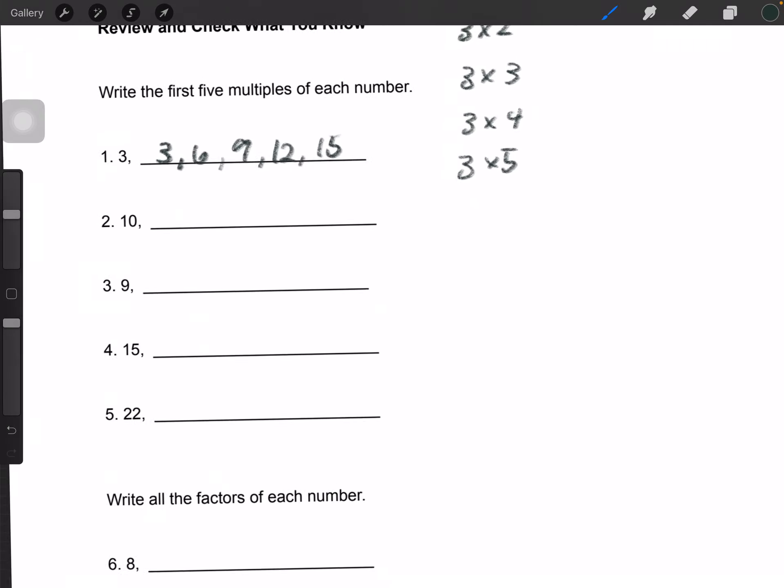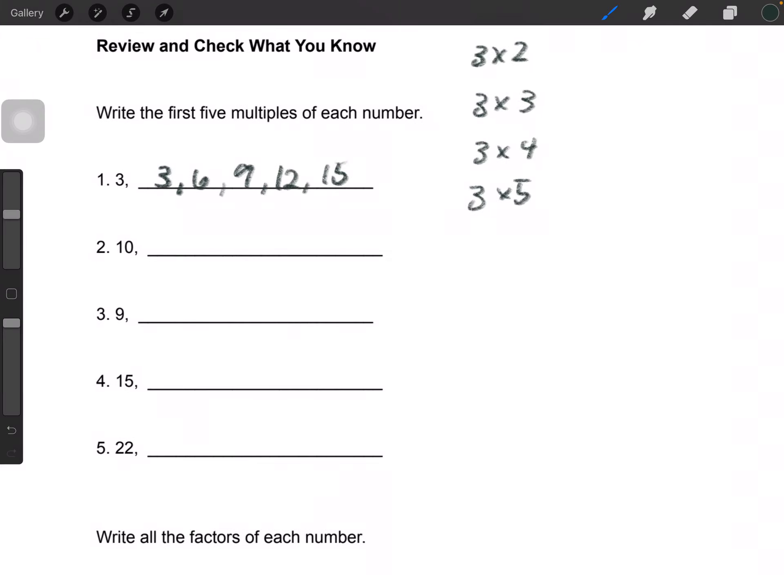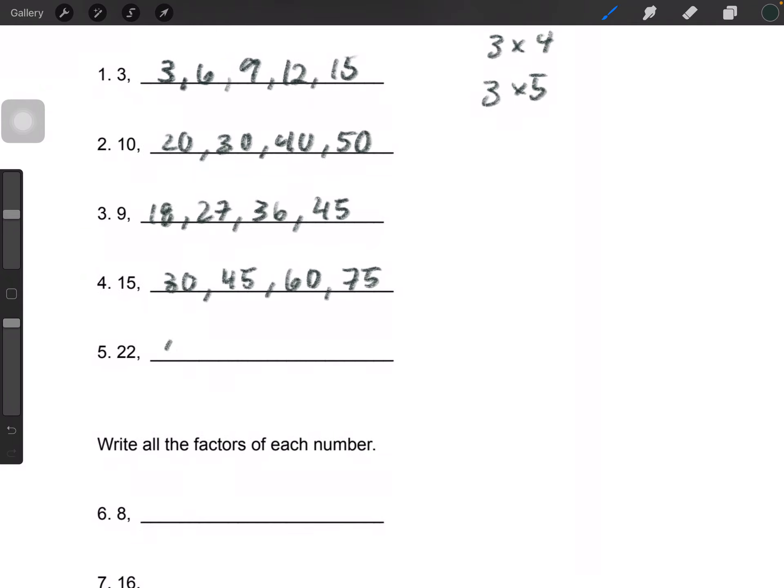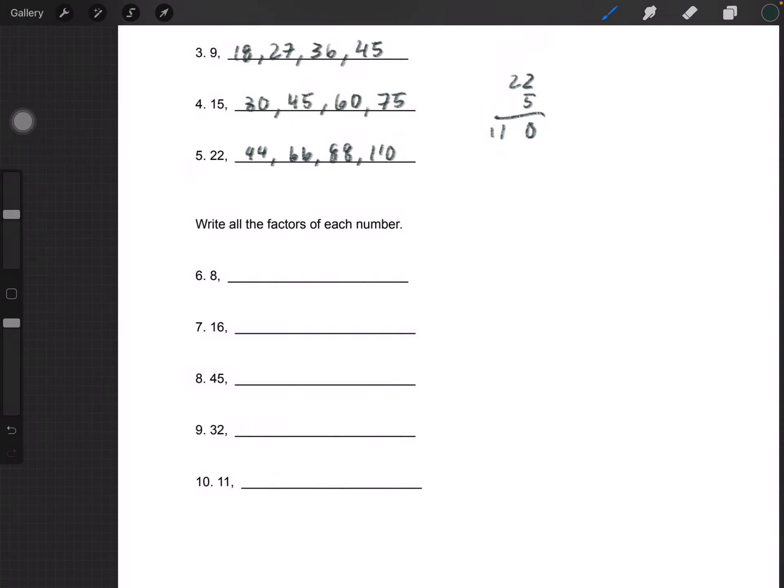For 10 it would be 10, 20, 30, 40, 50. For 9 it would be 9, 18, 27, 36, and 45. For 15 it would be 15, 30, 45, 60, and 75. And for 22 it would be 44, 66, 88, and 110.